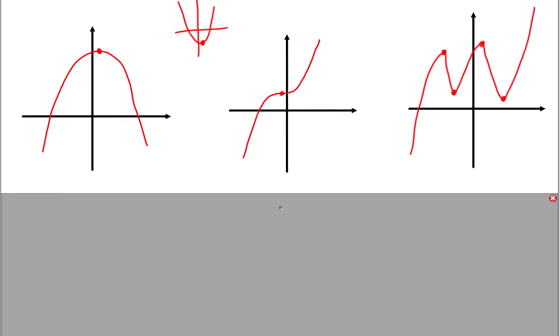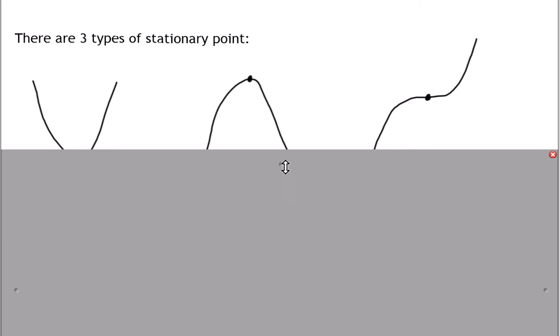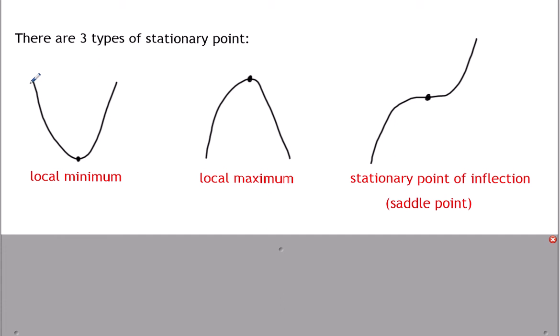So there are three types of stationary point. We've got what's called a local minimum. On a graph, it doesn't mean that this is the lowest that it ever goes across the entire graph. But for this section of the graph, it's the lowest point. There's nothing to say that if I carried this graph on it doesn't go down further. So it's not the overall lowest bit of the graph, but for the section we're looking at it is. So we call it a local minimum.